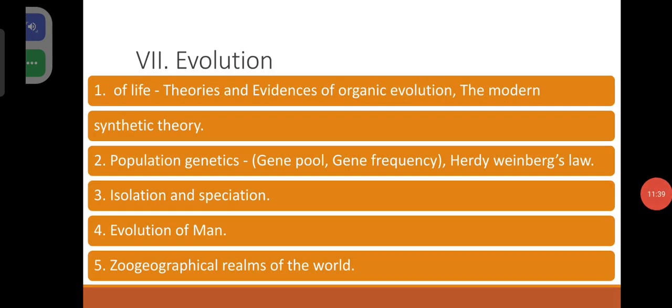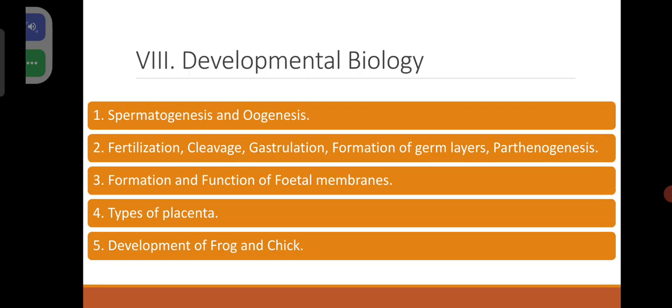Evolution: you have to list out the various theories of origin of life, theories and evidences of organic evolution, the modern synthetic theory, Darwinism, Lamarckism, chemical evolution theory, population genetics, gene pool, gene frequency, Hardy-Weinberg equilibrium, isolation and speciation, evolution of man, and zoogeographical realms of the world.